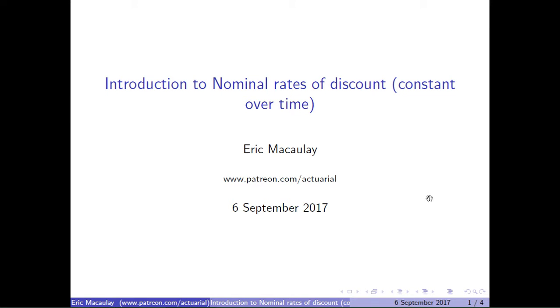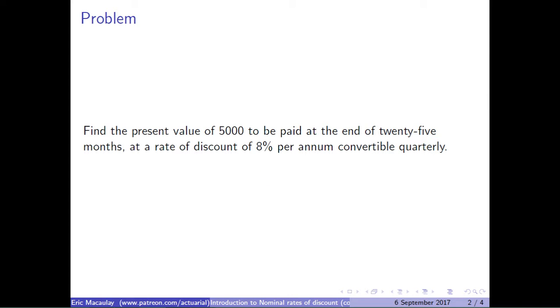Introduction to normal rate of discount constant over time. Find the present value of $5,000 to be paid at the end of 25 months at a rate of discount of 8% per annum convertible quarterly.